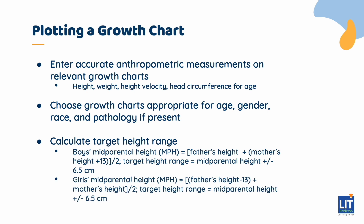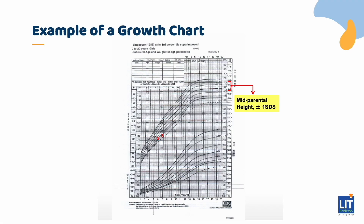If the patient is a girl, then 13 cm must be deducted from the father's height before averaging it with her mother's height. This is an example of a growth chart for girls aged 2 years to 20 years, showing the girl's height plotted serially over time as well as her mid-parental height ±1 standard deviation. You can therefore extrapolate from this target centile range and determine if this child is growing within her genetic potential or not. A child who has familial short stature would have a height near or below the 3rd percentile, but normal for the genetic potential of the family.